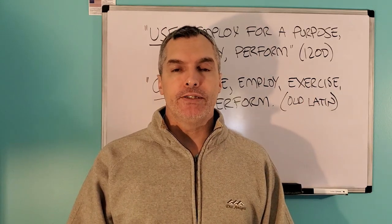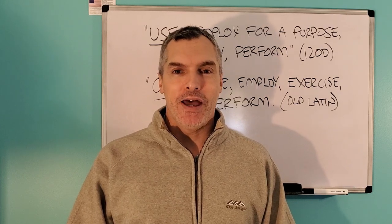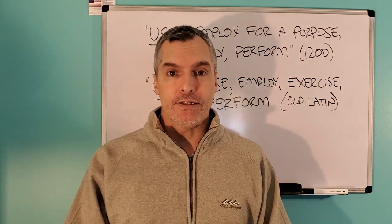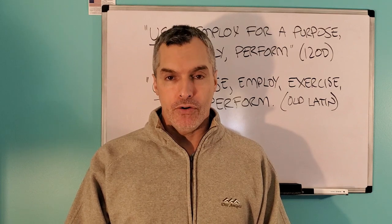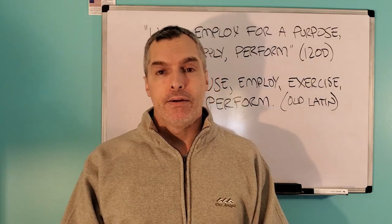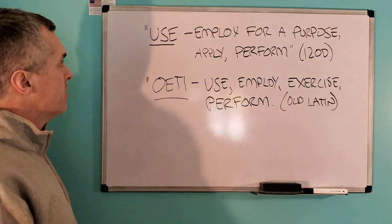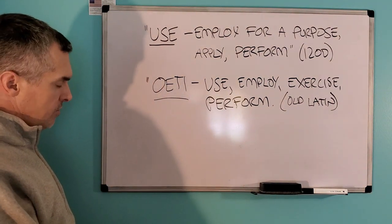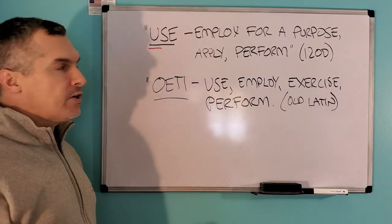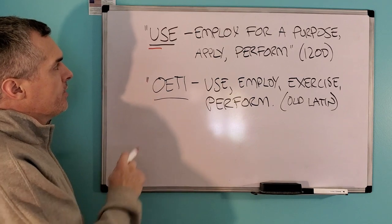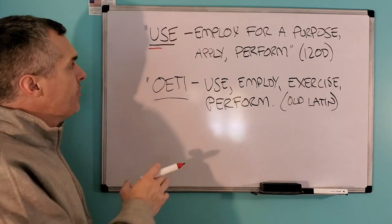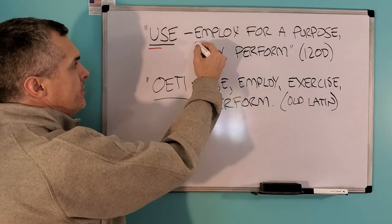I'd actually meant to make this video quite some time ago, and I'm just getting around to it now. I use the word Oeti in my conveyances in place of the no-contract word use, or usury, or usage. Why? Because use is no-contract, and the reason why is it's a vowel in front of a consonant at the beginning of a word. A single vowel in front of a consonant at the beginning of a word is a particle of negation, and thus, no-contract, and you can see it here.